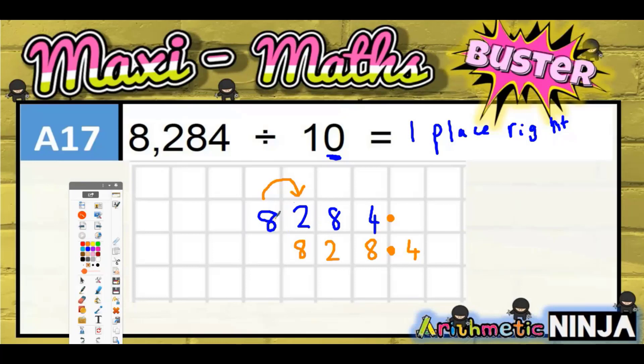So make sure every digit is in its own square, and you just move all the digits one square to the right. Final answer: 828.4.